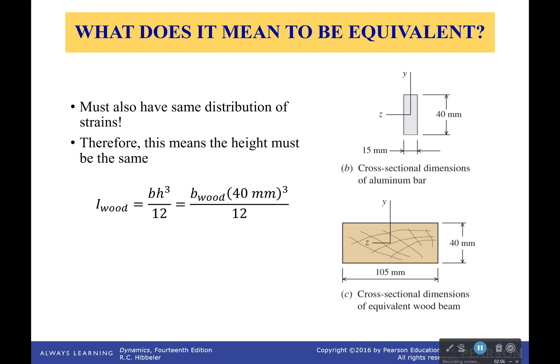So what can change? Well, if the height has to stay the same, and we already know what the moment of inertia for this piece has to be to have the same strain and radius of curvature, then the only thing that can change is the width. So we'll go from a very, very thin aluminum bar to a very thick wood bar. So that would mean that it would have to be 105 millimeters wide instead of 15 millimeters wide.